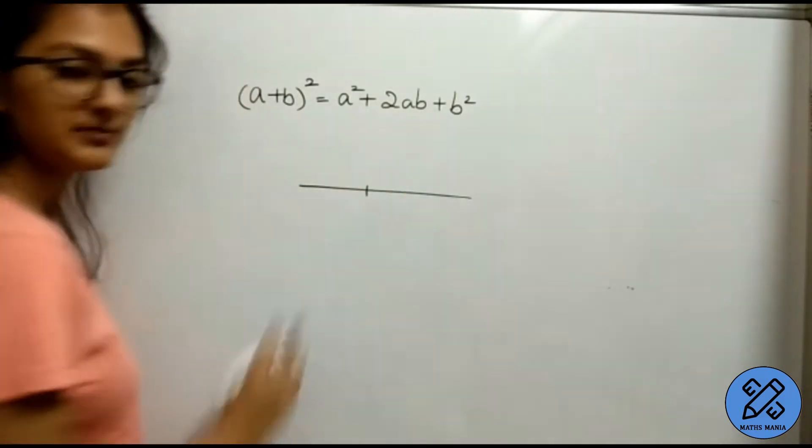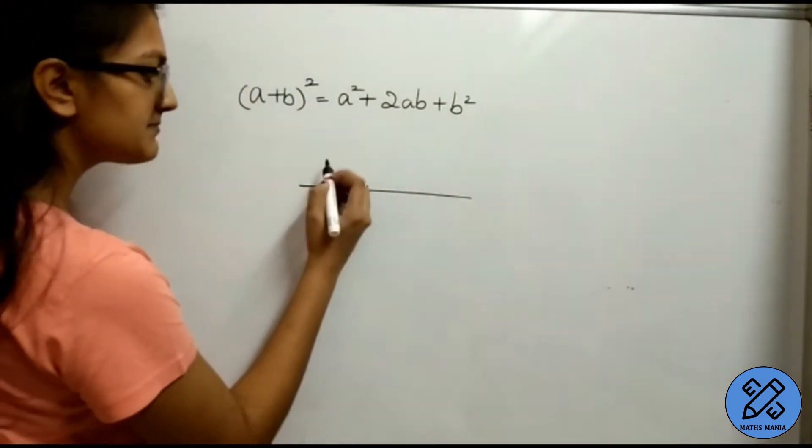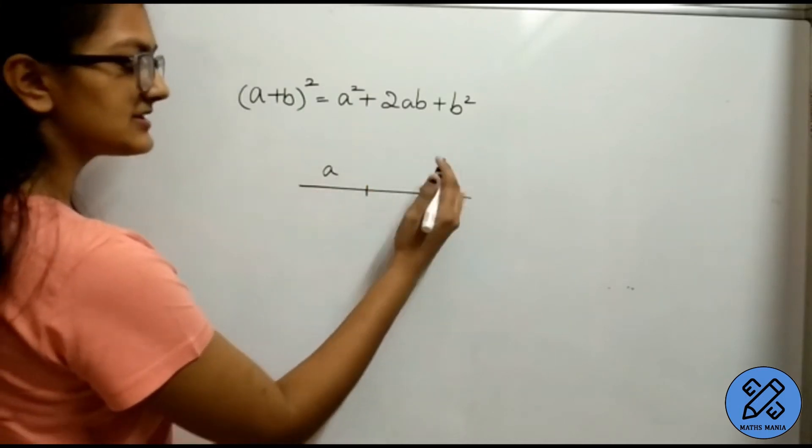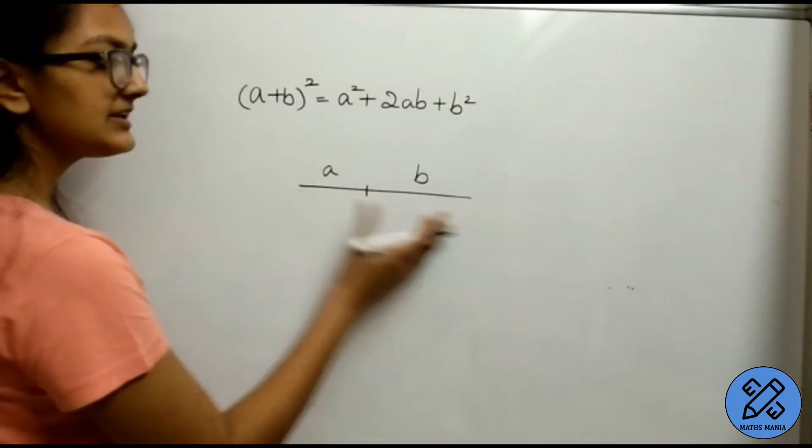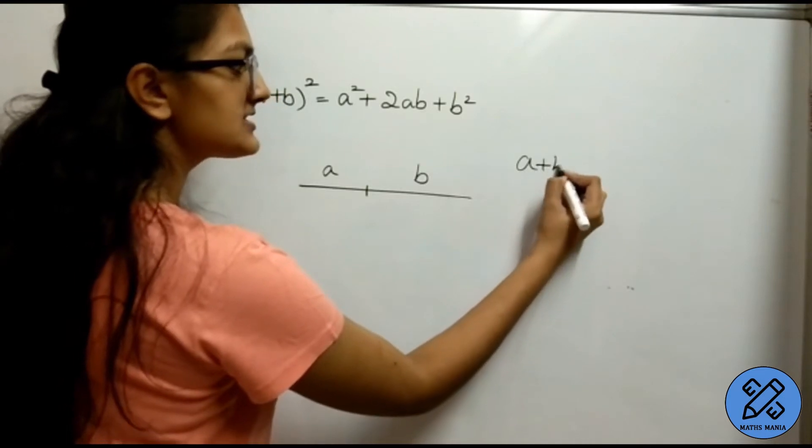We will draw an arbitrary point. Name this part as a and this part as b. Now, what is the length of the line? a plus b.